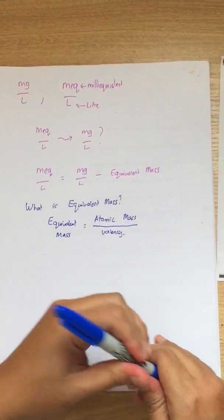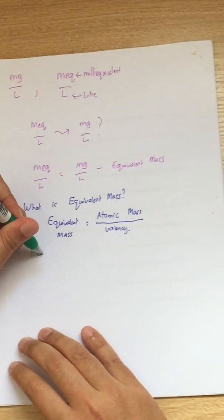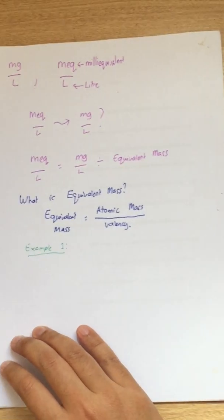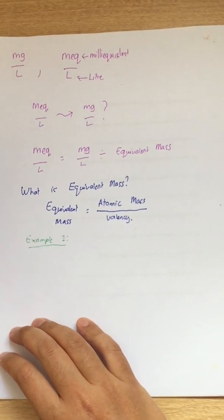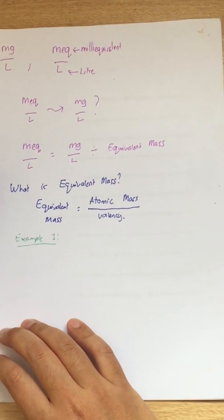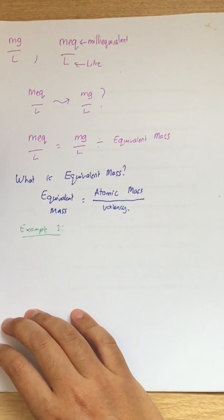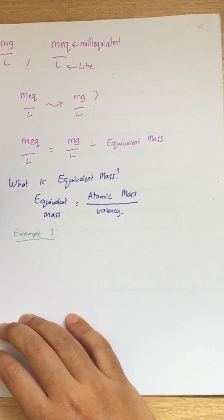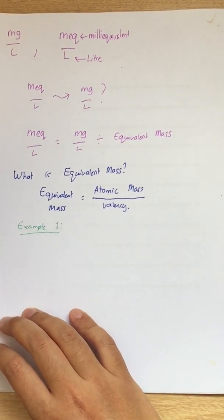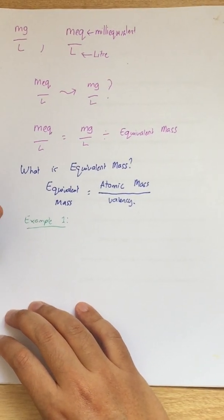Let's make an example. Example one, which is in your notebook under the topic of measurement of alkalinity and hardness, part B, on page 11 under the topic of milliequivalent per liter.